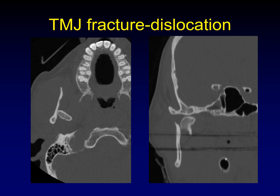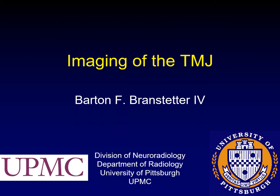Fracture of the condylar neck frequently takes the form of a fracture-dislocation because the lateral pterygoid muscle — now the only muscle acting on the fragment — pulls it inferiorly, dragging the fragment of condylar head and neck out of the glenoid fossa. Thus, condylar neck fractures are frequently fracture-dislocations. This concludes part one of the lecture on imaging of the temporomandibular joint.